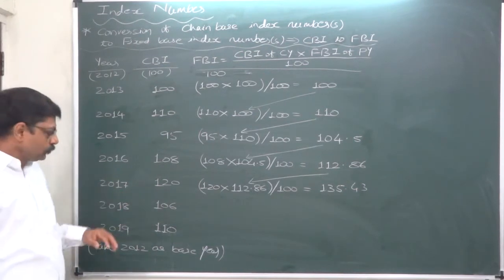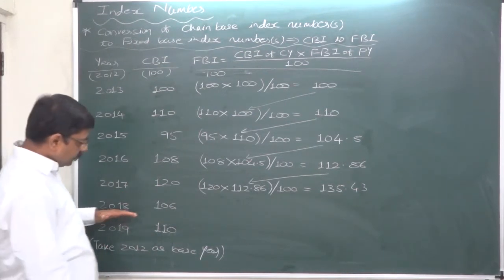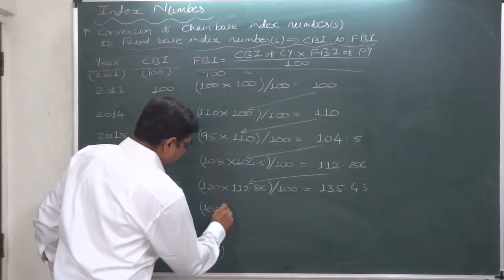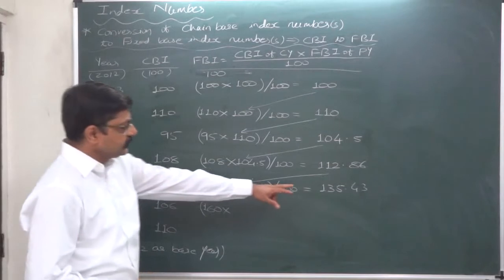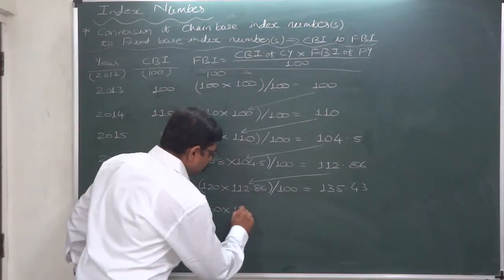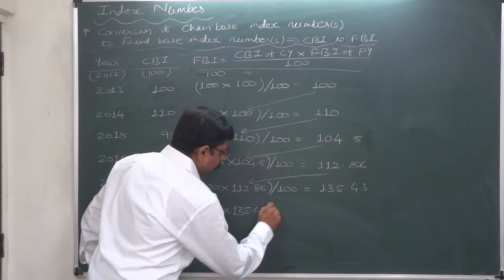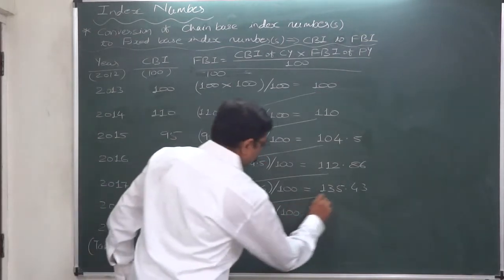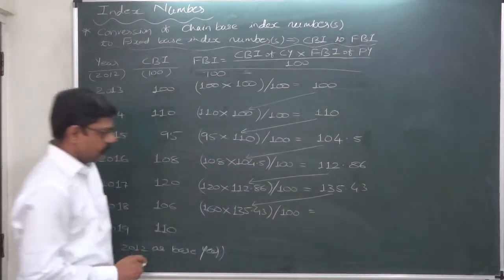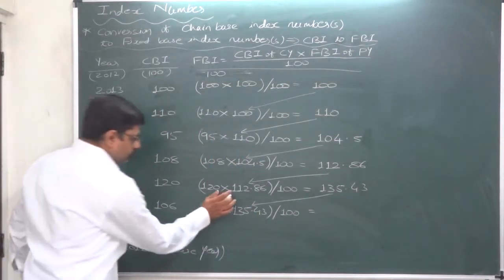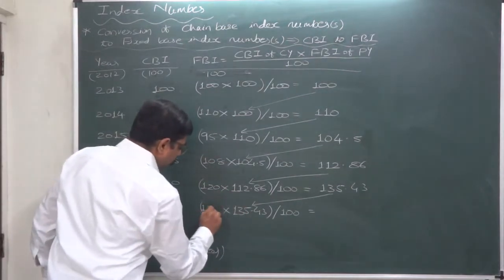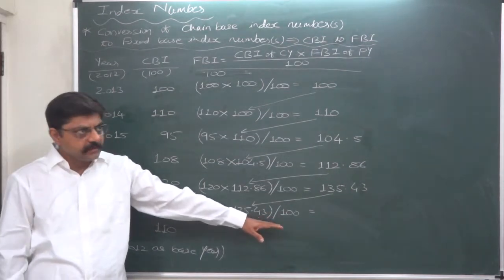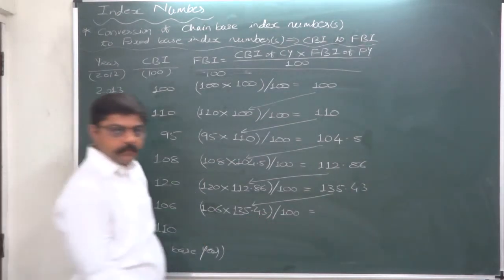For 2018: the chain base index number for the current year is 106, multiplied by the fixed base index number of the previous year that we calculated as 135.43, divided by 100. 106 multiplied by 135.43 divided by 100 comes to 143.56.